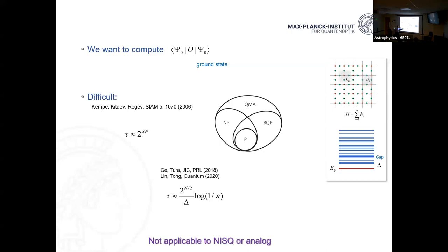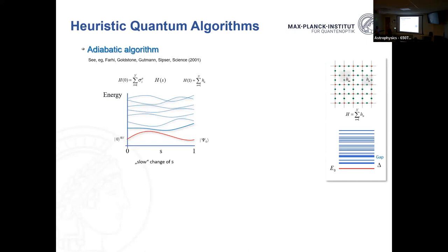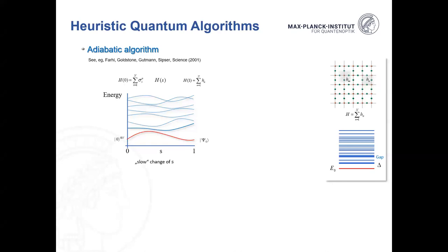These algorithms require full fault tolerance — they don't work on current noisy devices. I want to move to what are called heuristic algorithms: algorithms that probably work in practice and don't scale exponentially. The reason is that we can put conditions on the physical problem we want to solve. The physics problems we care about — Hubbard models, lattice gauge theories, spin models — are very special, not like general problems. So you can look at properties these problems have and design algorithms that achieve better results.